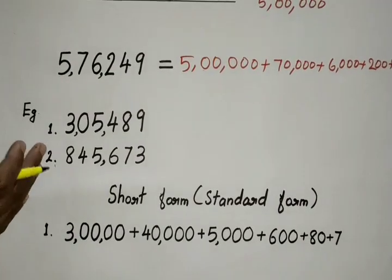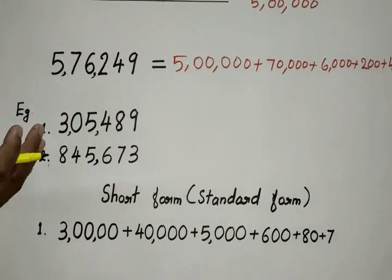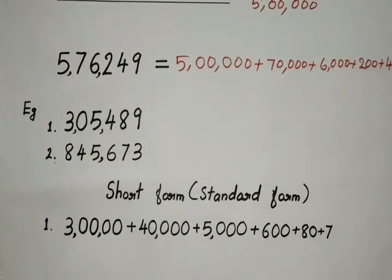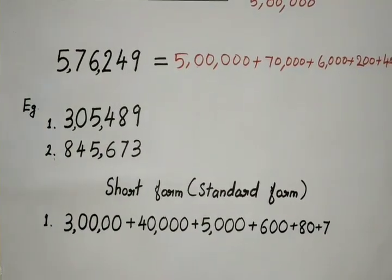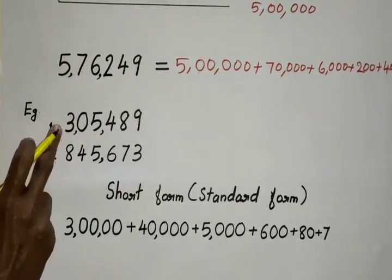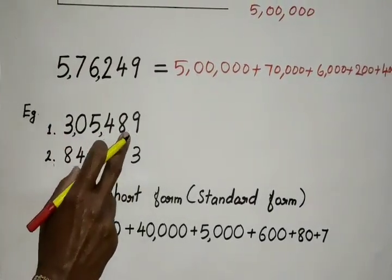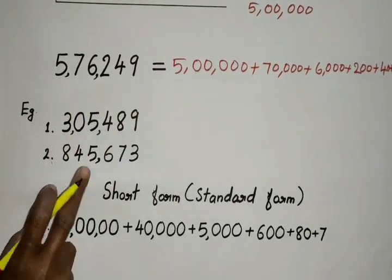Now let us write the expanded notation of some numbers. The first number: 3,005,489.